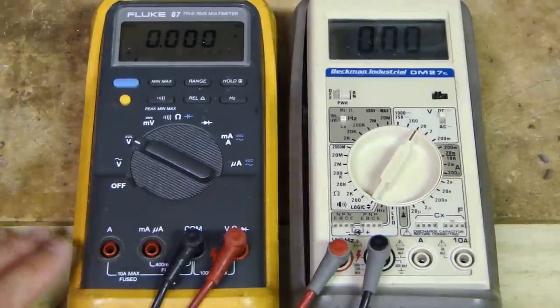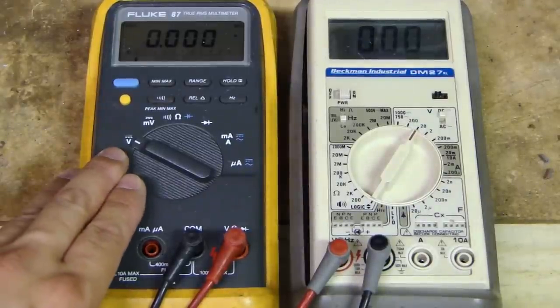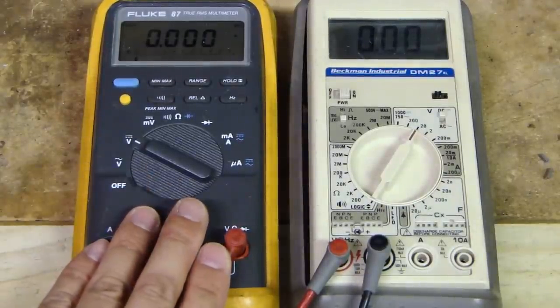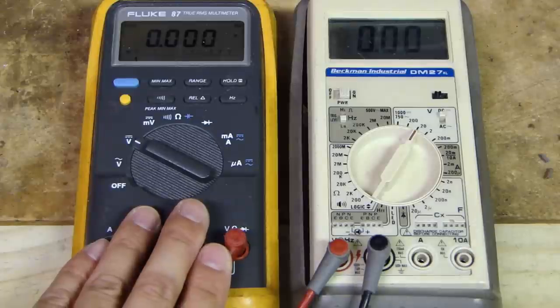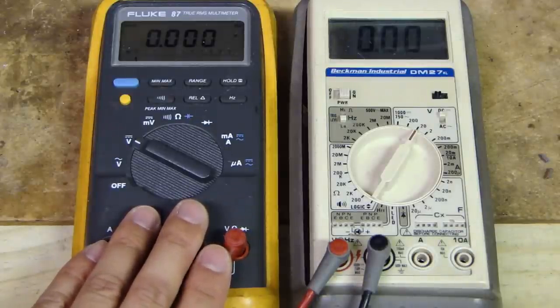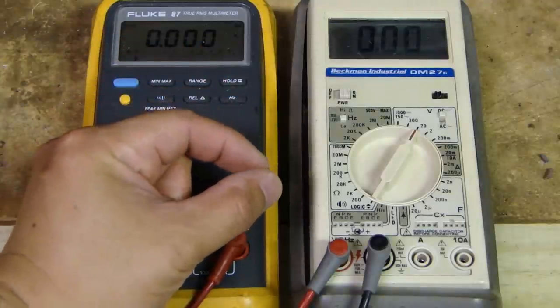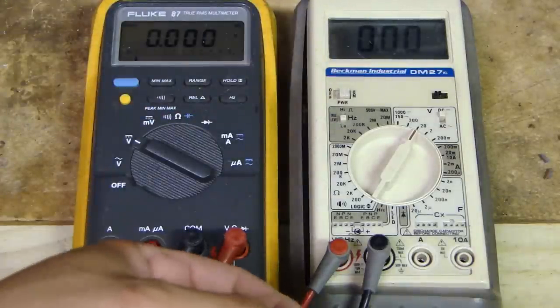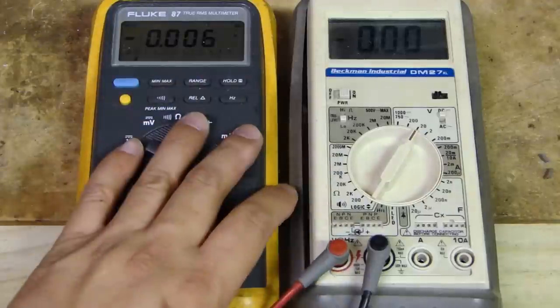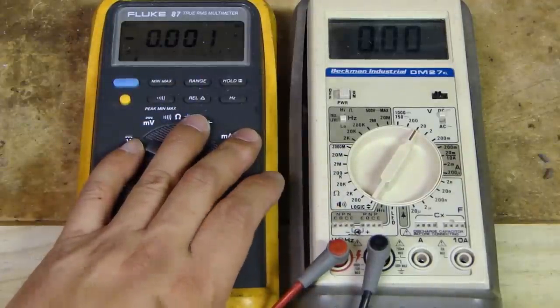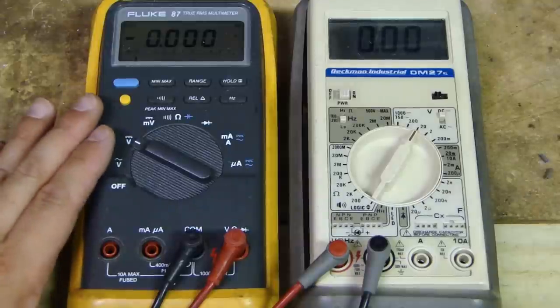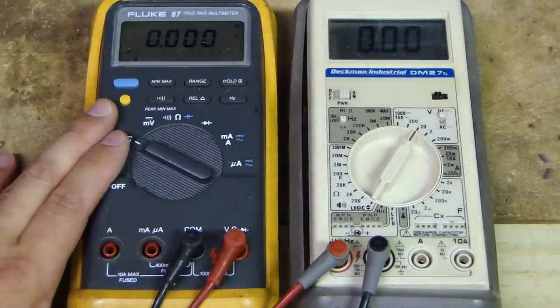While I'm talking about the DC voltage measurement, I want to quickly talk about test lights. A lot of people who do automotive work tend to have a test light that uses a little incandescent bulb inside, and there's one probe at the end, and it basically tests if there's any voltage going through that test light, and it lights up that bulb.